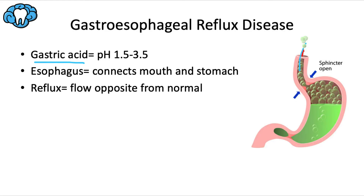Sometimes that gastric acid leaks upward in the wrong direction, or refluxes, into the esophagus, throat, and mouth — and that's how we get the name gastroesophageal reflux disease. A little bit is no big deal and is quickly buffered by our saliva, but if it occurs consistently over the day or during the night, when we produce much less saliva, we can start to experience problems like heartburn and tooth erosion.